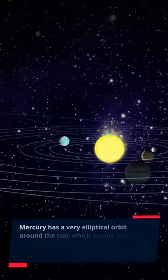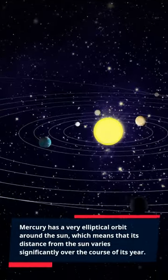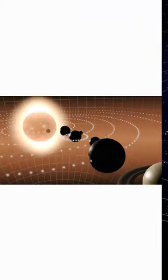Mercury has a very elliptical orbit around the Sun, which means that its distance from the Sun varies significantly over the course of its year.